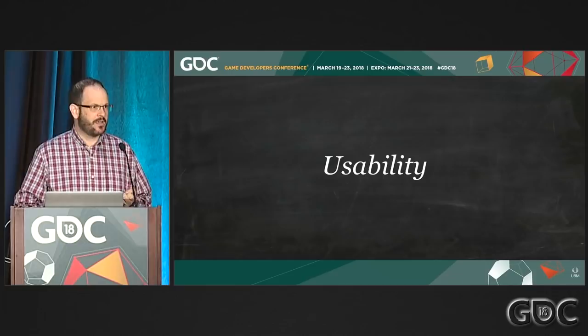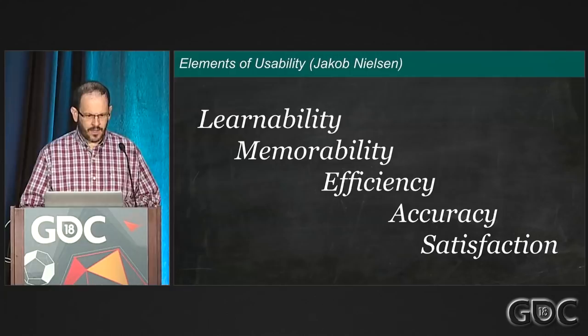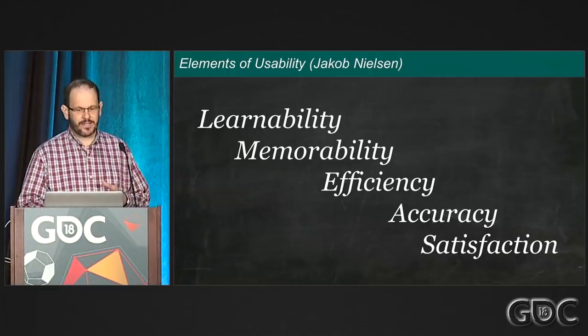Jacob Nielsen, a usability expert, has broken down usability into five main attributes. We're going to be looking at these in tabletop games. There's learnability — how easy is it for a new player, a new user, to learn how to interact with an interface?